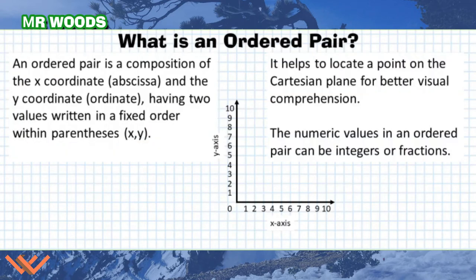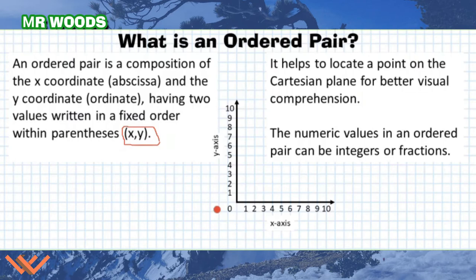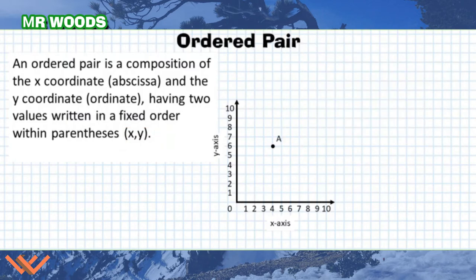Now we can get into what an ordered pair is. An ordered pair is a composition of the x-coordinate and the y-coordinate, having two values written in a fixed order with parentheses — written as (x, y). We always put down the x value, which is the horizontal value, first, and then the vertical value, or y-axis value, second. This helps to locate a point on the Cartesian plane. The numeric values in an ordered pair can be integers or fractions.